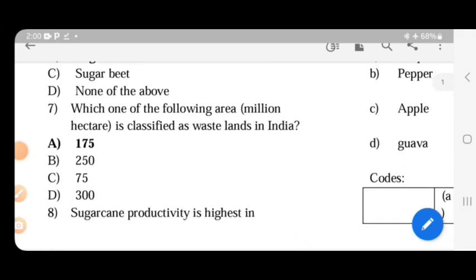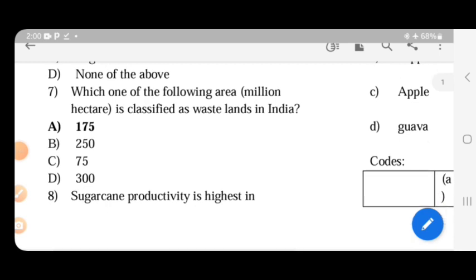Which of the following area in million hectares is classified as wasteland in India? This is the same data. Now you can Google it if not, you can check. Please check the latest data.